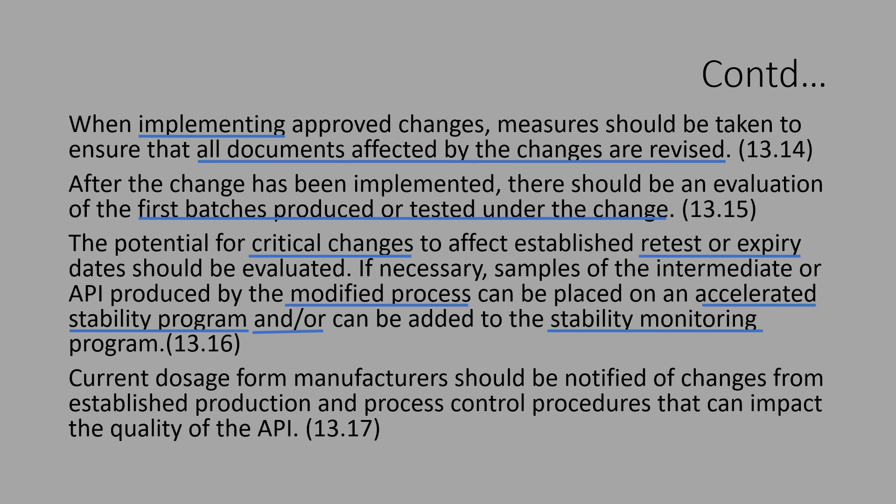Section 13.17 says the current dosage form manufacturer should be notified of changes from established production and process control procedures that can impact the quality of the API. All critical and major changes have to be communicated to current dosage manufacturers. It is also necessary to communicate such changes to regulatory agencies and submit the revised documents.